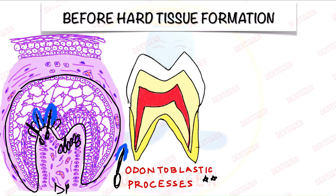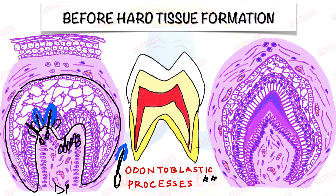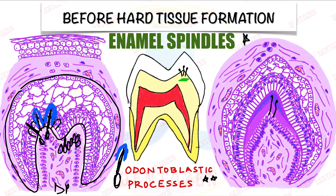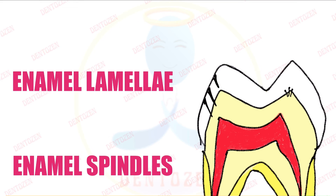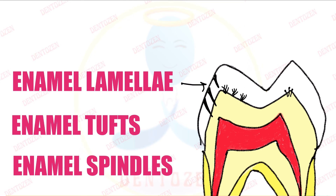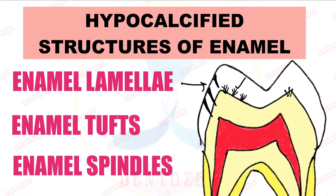These developing odontoblastic processes move and cross into the cells of the inner enamel epithelium, coming to lie between those cells. Then those cells transform into ameloblast cells and form enamel around the odontoblastic processes, trapping them inside the enamel. When we see them under the microscope in a ground section of an erupted tooth, we see them as dark spindle-shaped structures — enamel spindles. They are ecto-mesenchymal in origin, forming from odontoblastic processes. Along with enamel lamella and enamel tufts, they are considered hypo-calcified structures of enamel.